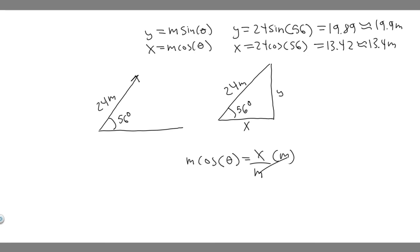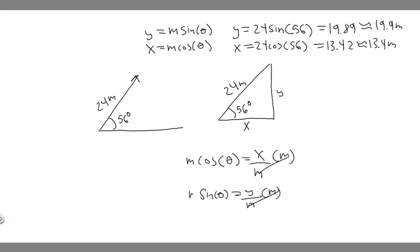And it works the same for sine — SOH from SOHCAHTOA — sine equals opposite over hypotenuse. The opposite side is y, over the hypotenuse denoted by m. Multiply both sides by m and you get m times the sine of theta equals y — and that's exactly the formula we're using.